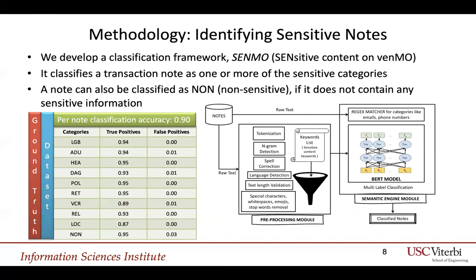Our methodology for identifying sensitive notes: we developed a classification framework called Senmo, which classifies a transaction note as one or more of the sensitive categories. A note can also be classified as non-sensitive if it does not contain any sensitive information. It has a simple preprocessing module and a semantic engine module for learning or classifying notes as one or more of the sensitive categories using the machine learning based NLP technique BERT. We also use regular expressions for directly discerning categories such as email, phone numbers, addresses, etc. Senmo achieves per-note classification accuracy of about 90% on the ground truth dataset and performs well on individual categories too, with high true positives. Small false positives indicate that we do not misclassify something innocuous as sensitive. We may miss some sensitive notes, so our analysis is really an underestimate.